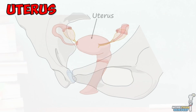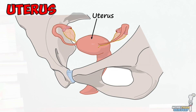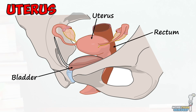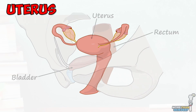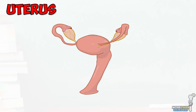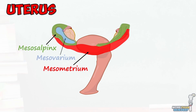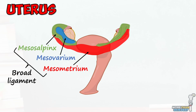The uterus is a thick, hollow, muscular organ that lies roughly between the bladder anteriorly and the rectum posteriorly. It is most notably the part of the female reproductive system in which the fertilised embryo will implant and grow during pregnancy. Like the ovaries and fallopian tubes, it is surrounded by a sheet of peritoneum, in this case known as the mesometrium. When we combine the mesometrium, mesosalpinx, and mesovarium, they are collectively known as the broad ligament.